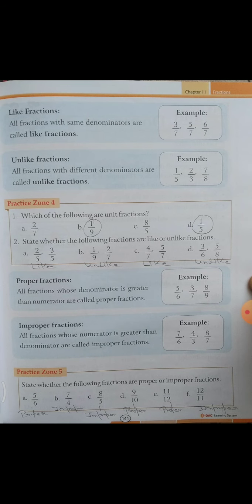Come to Practice Zone 4. Practice Zone 4 ke andar aapko kehna hai: which of the following are unit fractions? Unit fraction wo hota hai jiske numerator mein 1 ho. Ab iske andar A part mein nahi. B part apna kya hai — unit fraction, because iske numerator mein 1 hai. Toh 1 by 9 — ye kya hai? Unit fraction. Aur iske andar C part nahi hai. And D part: 1 by 4, 1 by 5 — ye bhi kya hain? Unit fraction.